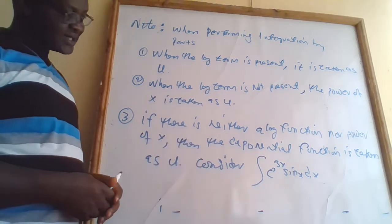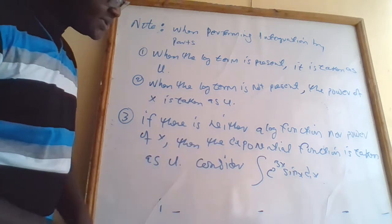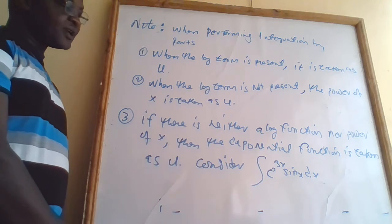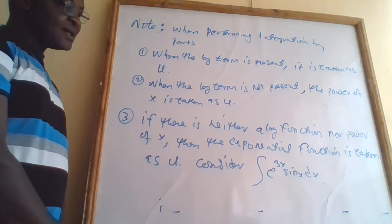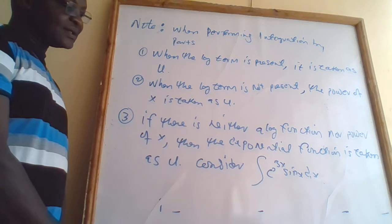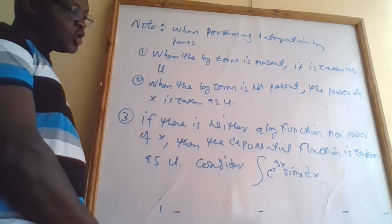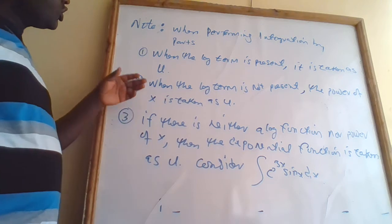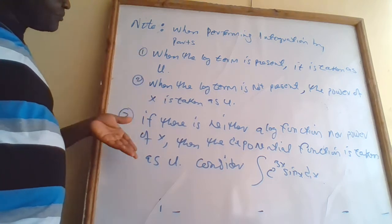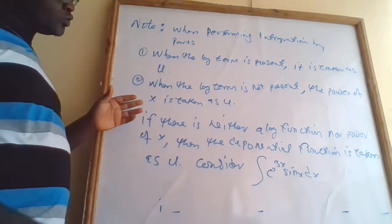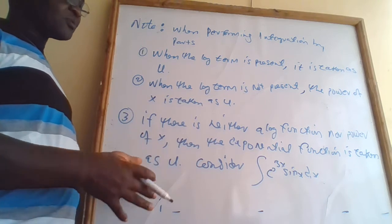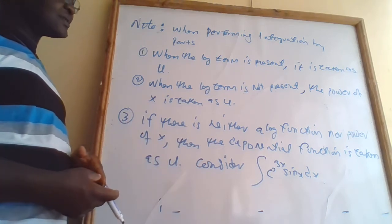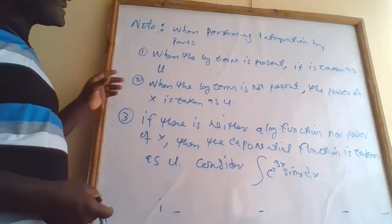Now let us consider this example. We want to integrate e^(3x) · sin(x) dx. When performing integration by parts, you must ask yourself these three points for you to do the assigning — which one is taken as u and which one is taken as dv. This is the guideline.